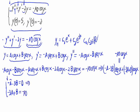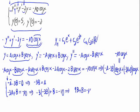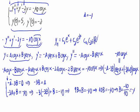From the sine equation, a = -3b. Substituting into the cosine equation: -3·(-3b) + b = -10, so 9b + b = -10, giving 10b = -10, therefore b = -1.